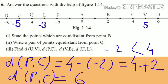Next, distance between point P and C. Observe in the line — the coordinate of point P is −2 and the coordinate of point C is 4. Here 4 is greater than −2, so the distance is the greater coordinate minus the smaller coordinate: 4 − (−2) = 4 + 2 = 6. So the distance between point P and C is 6 units.